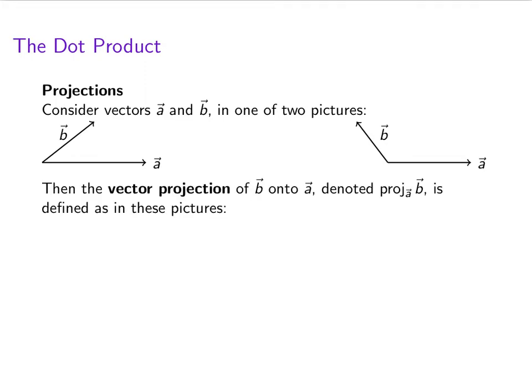We're going to define something called the vector projection of B onto A. And then this is the notation that we're going to use, where we're kind of putting the vector A as a subscript. It's defined as in these pictures. The red vector is the projection of B onto A.